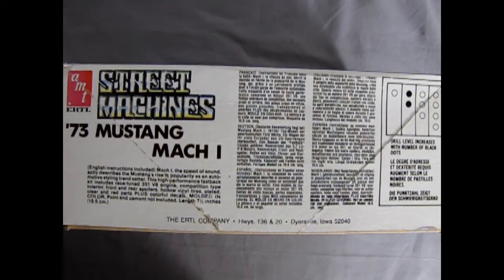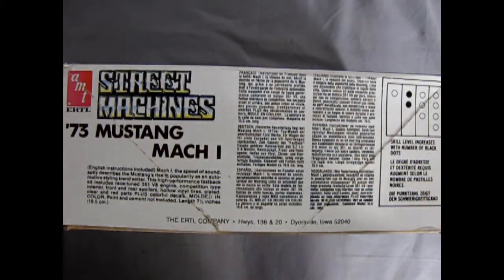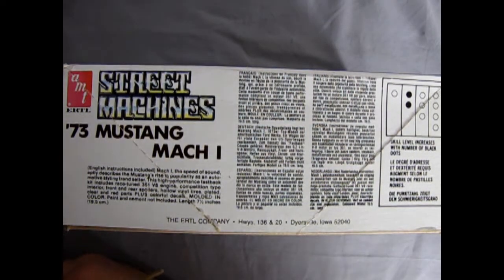On the opposite side of the box we see this kit is a skill level 2. It has English instructions included. Mach 1 at the speed of sound aptly describes the Mustang's rise in popularity as an automotive styling trendsetter. This high performance fastback kit includes race tune 351 V8 engine, competition type interior, front and rear spoilers, hollow vinyl tires, plated clear and red parts plus colorful decals.